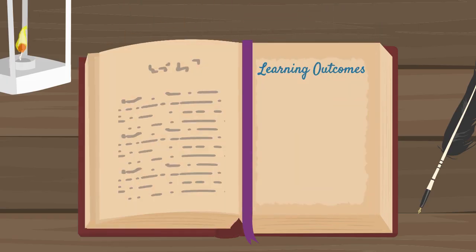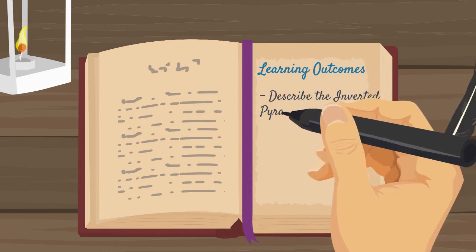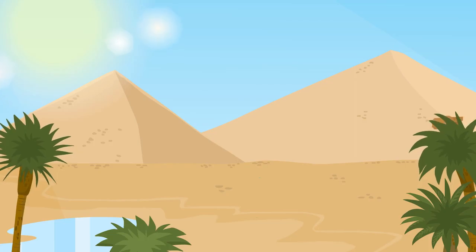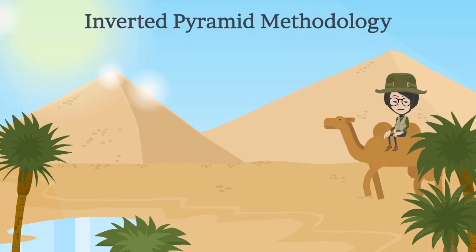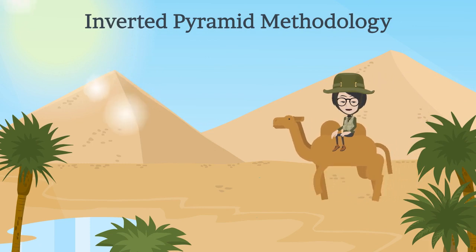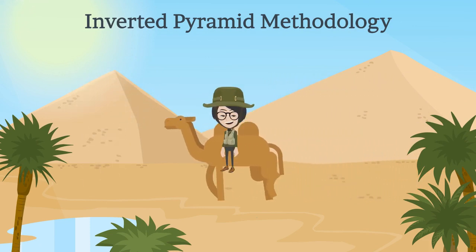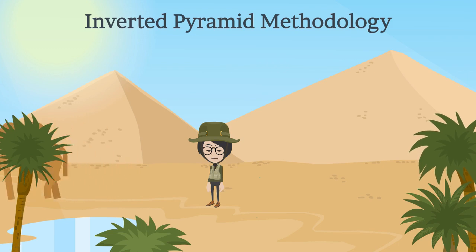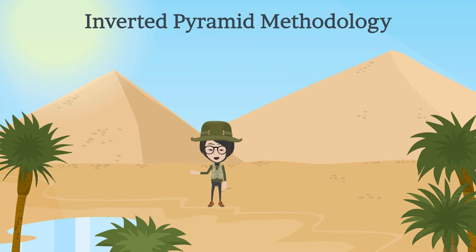The learning outcome of this video is for you to be able to describe the inverted pyramid methodology. What is inverted pyramid? The answer is it is a methodology of writing that has been widely adopted by media outlets in the modern age. It is one of the most effective ways to communicate information about certain topics.